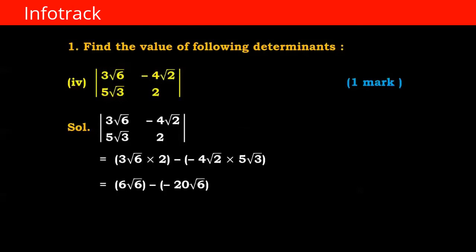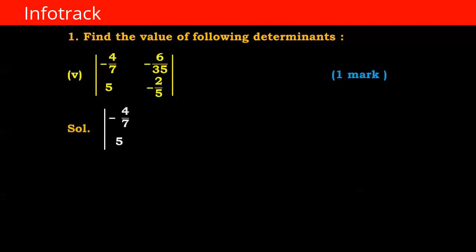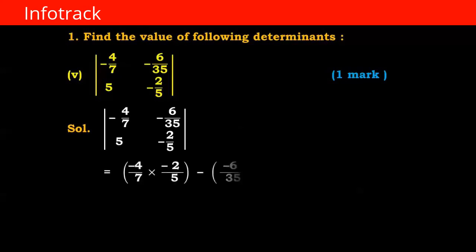The minus minus becomes plus, giving 6√6 plus 20√6, which equals 26√6. For another determinant with entries minus 4/7, minus 2/5, minus 6/35, and 5: cross multiply to get minus 4/7 into minus 2/5 minus minus 6/35 into 5. That gives 8/35 plus 30/35. Adding the numerators: 8 plus 30 equals 38, so the value of the determinant is 38/35.